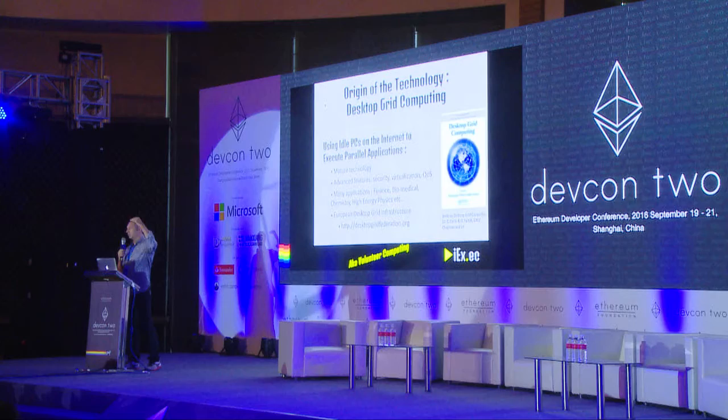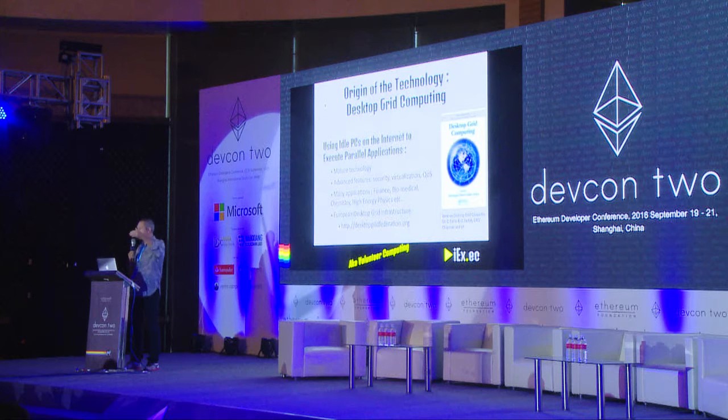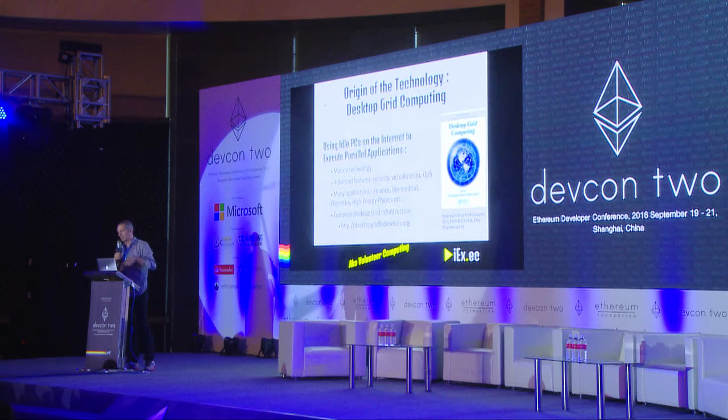The technology to build a distributed cloud has actually been there for a long time. We used to call it desktop grid computing — the idea of using PCs on the internet when they are idle. It's very mature technology. For instance, in Europe, the European Union funded the European desktop grid infrastructure with about 11 different sites in Hungary, France, Denmark, etc., totaling 200,000 computing nodes. This was available to traditional e-science infrastructure and transparently executed applications from finance, biomedical research, mathematics, and energy physics.